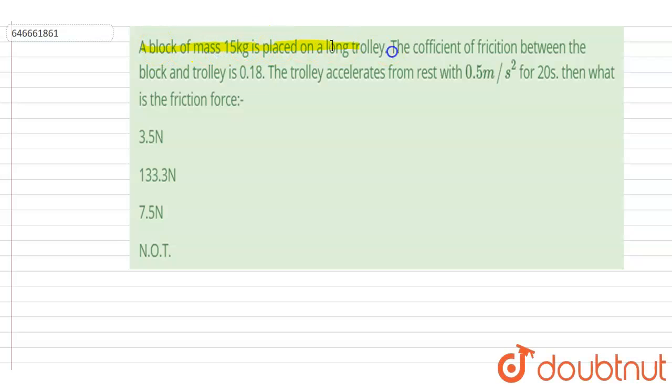15 kg is placed on a long trolley. The coefficient of friction between the block and the trolley is 0.18. The trolley accelerates from rest with 0.5 meter per second squared for 20 seconds. Then what is the friction force?